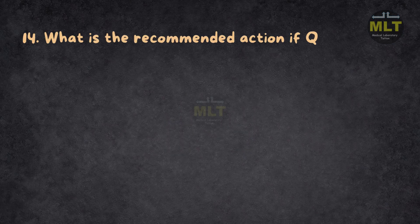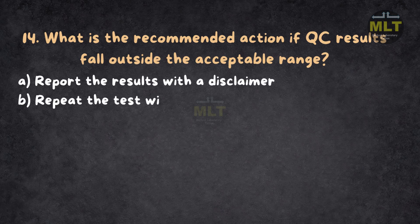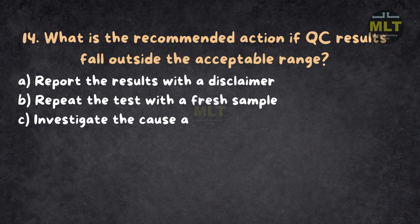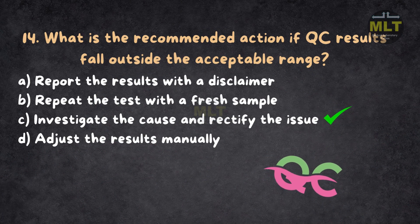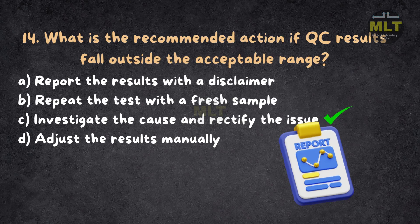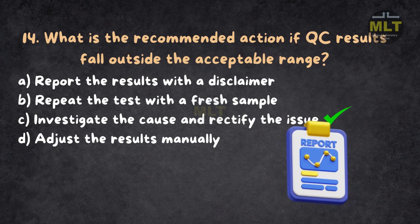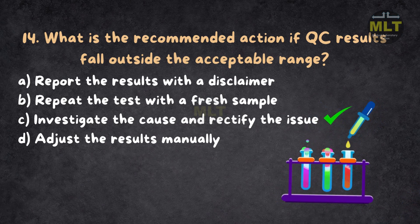Question 14: What is the recommended action if QC results fall outside the acceptable range? a. Report the results with a disclaimer. b. Repeat the test with a fresh sample. c. Investigate the cause and rectify the issue. d. Adjust the results manually. Correct answer: c. Investigate the cause and rectify the issue. When QC results exceed acceptable limits, the issue must be identified and resolved before further testing. Reporting or manual adjustment without correction could compromise test reliability. Retesting without addressing the root cause is inadequate.